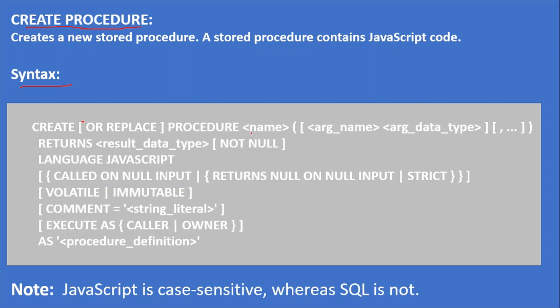The mandatory parameters are: procedure name, argument list, returns data type, IS NULL or NOT NULL, language (JavaScript), and CALLED ON NULL INPUT or STRICT, VOLATILE or IMMUTABLE, COMMENT, EXECUTE AS CALLER or OWNER, and the procedure definition. In this video I am going to talk about only mandatory parameters, and we will talk about optional parameters in another video.